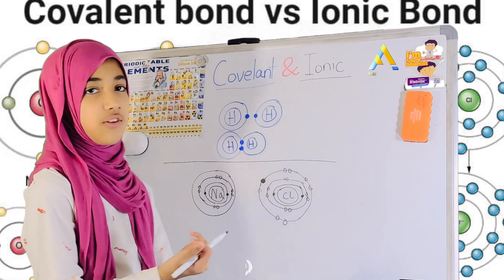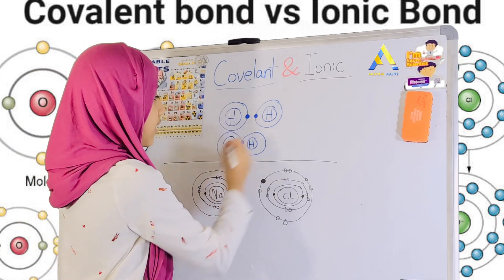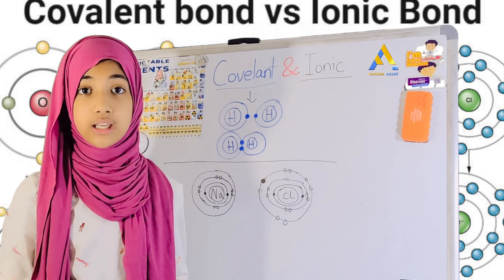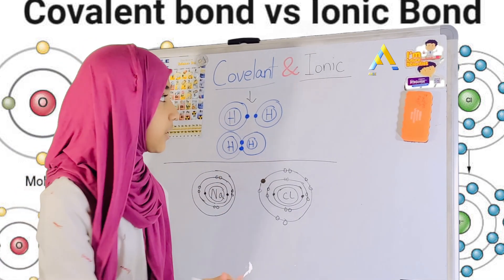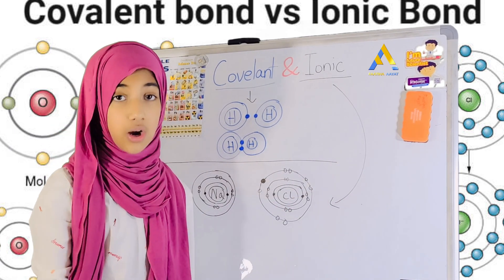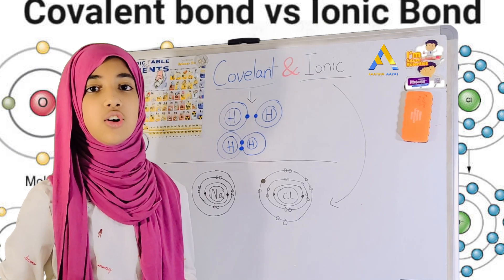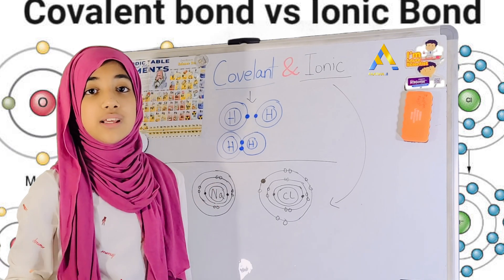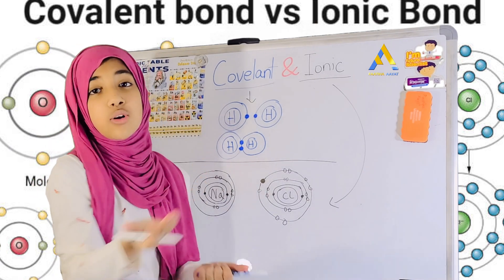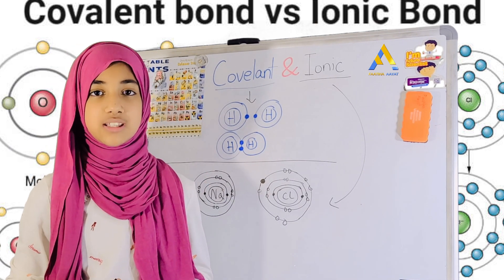So, dear viewers, in covalent bonds, it's not giving or taking — it's sharing in the middle. And in ionic bonds, it is not sharing, but it's giving or taking away. InshaAllah, I hope you all understood the differences — what's the covalent bond and what's the ionic bond. Thank you and assalamu alaikum.